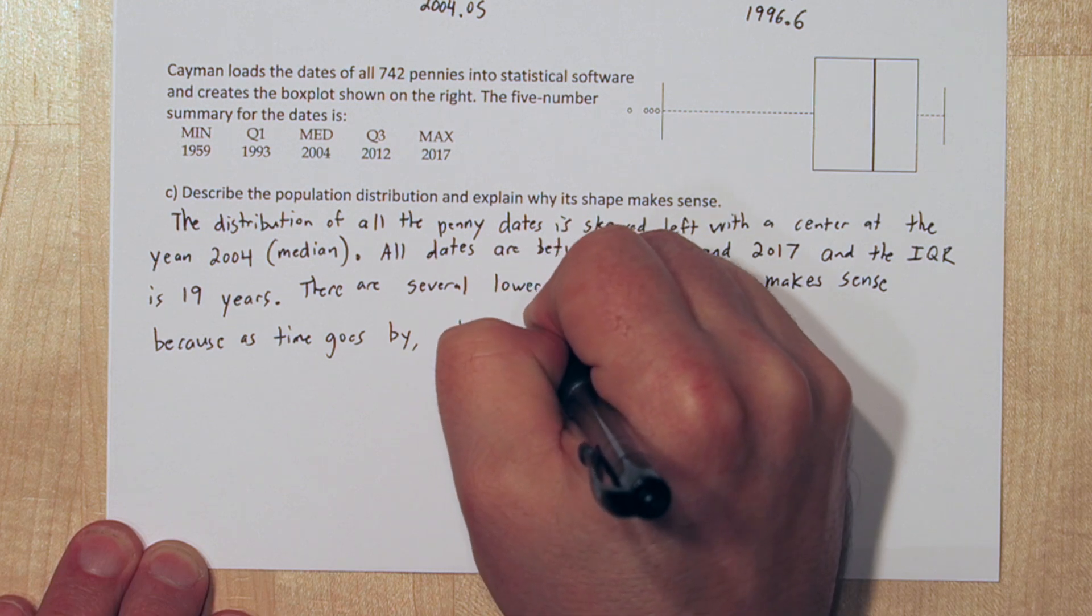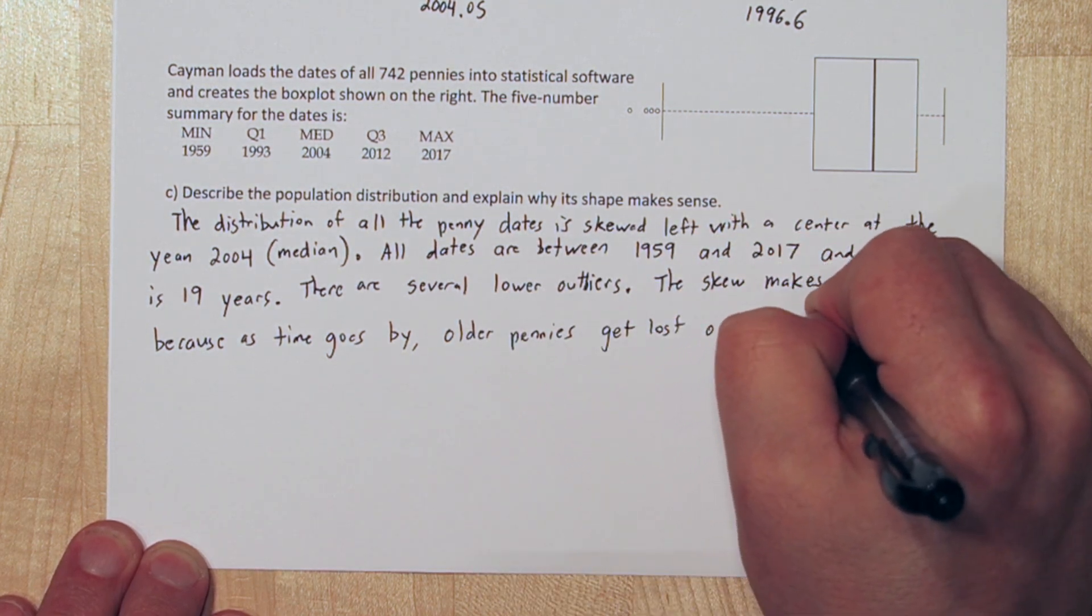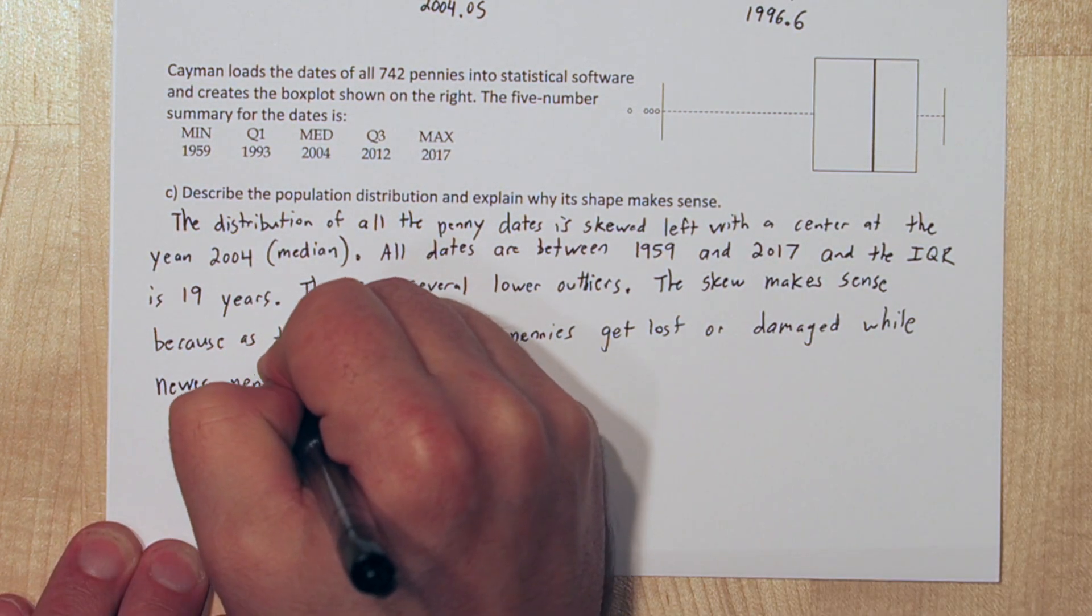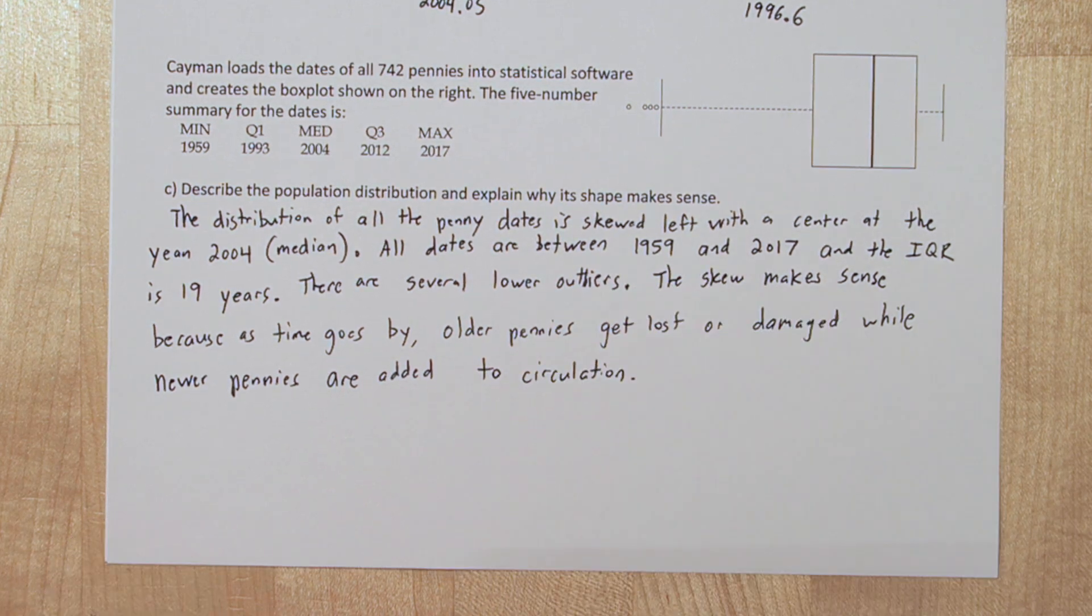When talking about the shape, the skew makes sense because as time goes by, older pennies get lost or damaged, while newer pennies are added to circulation.